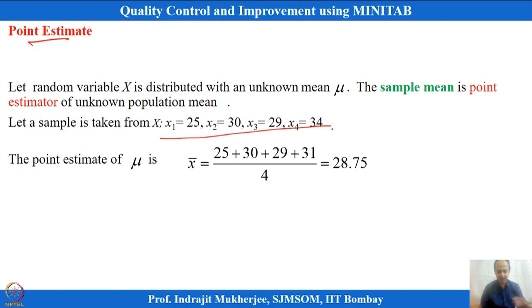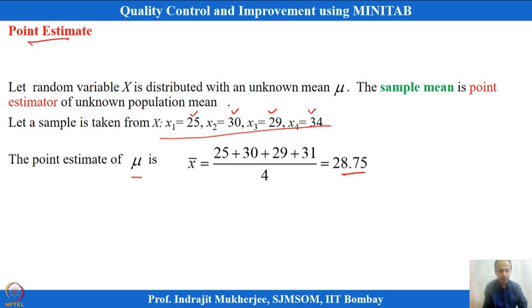When making a point estimation about the population parameter, x-bar is calculated. For example, if one set of observations is 25, 30, 29, and 34, the average of these is the point estimation we are getting for population μ.